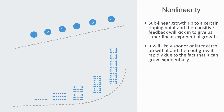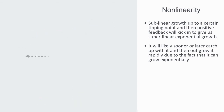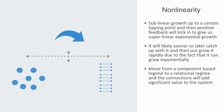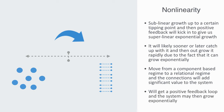In this example, the number of edges caught up with the number of nodes very quickly because we were talking about the maximum possible number of links. But typically in reality, not every node will be fully connected, and thus it may often take a lot longer for it to catch up. But once it does, we will start to move from a component-based regime to a relational regime, and the connections will add significant value to the system. We will get a positive feedback loop and the system may then grow exponentially. This is called the network effect.